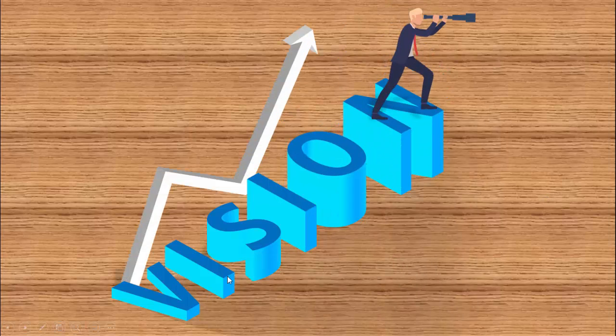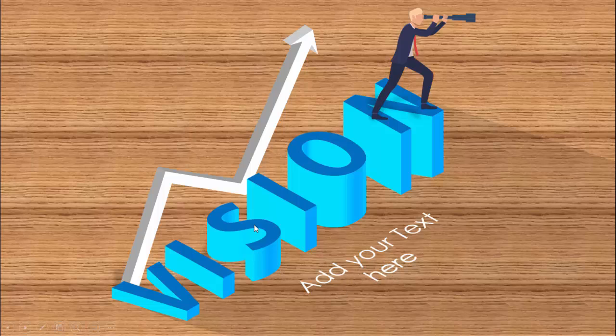In today's tutorial I'm going to show you how to create an animated vision slide in PowerPoint, and this is completely editable. Let me show you how it looks — each alphabet will fall down with the word 'vision', and then a character with a binocular looking to the other side. You can add a shadow effect, detail text, and arrow designs at the back side.